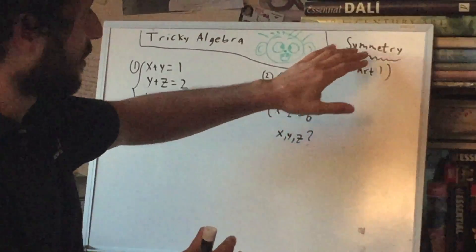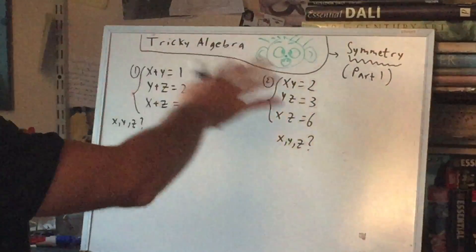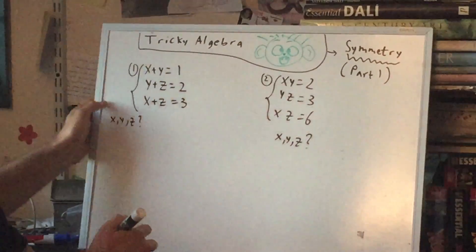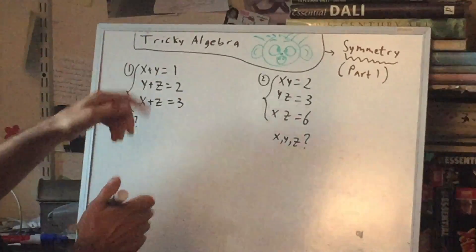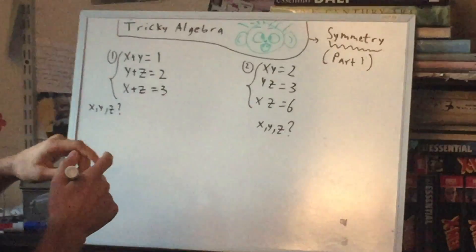Now part one will be about symmetry, so let's take a look at some of these problems. Number one, so there's many ways you might try to do this. The first way, which will already work, would be substitution.